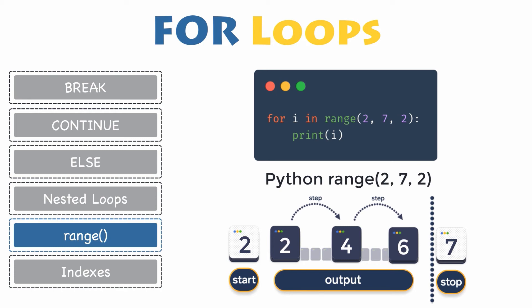Here is an example: for i in range(2, 7, 2), print i. The sequence starts from 2 and ends at 6 because the ending parameter is 7 and the step is 2. Therefore, the for loop jumps two steps after each iteration and it will result in printing out the numbers 2, 4, and 6.